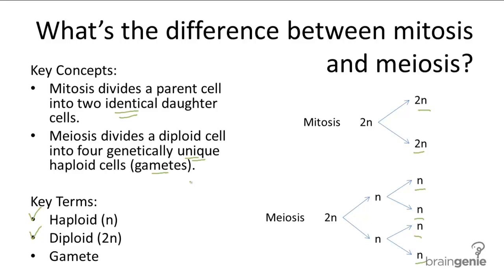whereas meiosis is used to produce gamete cells or sex cells, such as sperm and egg cells. Unique haploids have an evolutionary advantage by making gene combinations within gametes more diverse. That's why meiosis creates genetically unique haploid cells.